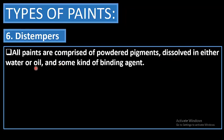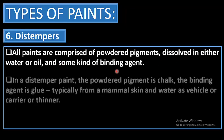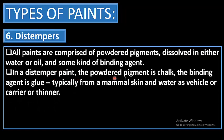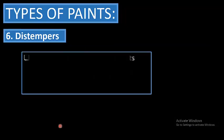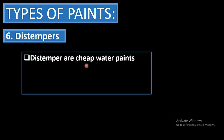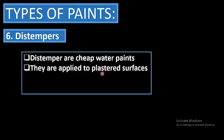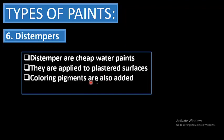Distemper: all paints are comprised of powdered pigments dissolved in either water or oil with a binding agent. In distemper paint, the powdered pigment is chalk, the binding agent is glue (typically from mammal skin), and water serves as the vehicle or thinner. Paint experts refer to distemper as paint bound with animal glues, vegetable-based glue, or even glue derived from eggs or milk. Distempers are cheap water paints applied to plastered surfaces, with coloring pigments added, and are easy to apply.